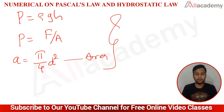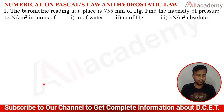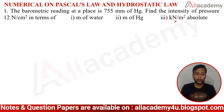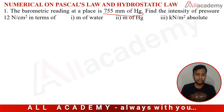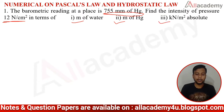Let us move to the first problem. The problem states: a barometric reading at a place is 755 mm of Hg; find the intensity of pressure in Newton per centimeter square, in terms of meter of water, meter of Hg, and kilo Newton per meter square absolute pressure. The barometer shows a reading of 755 mm of Hg and the pressure is 12 Newton per centimeter square. We need to identify the head in terms of water, in terms of Hg, and the absolute pressure.